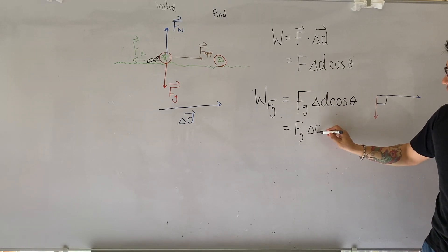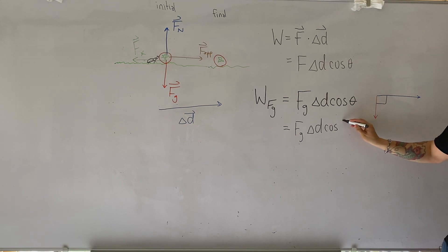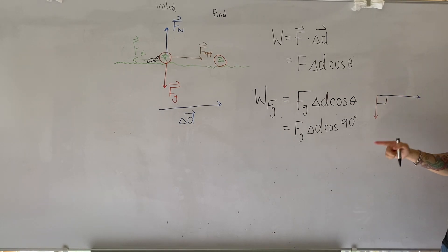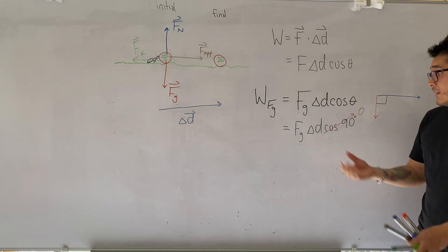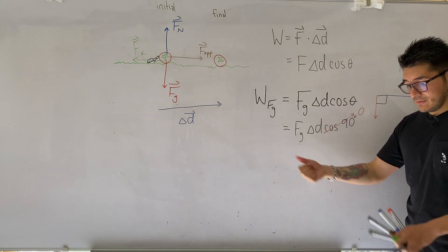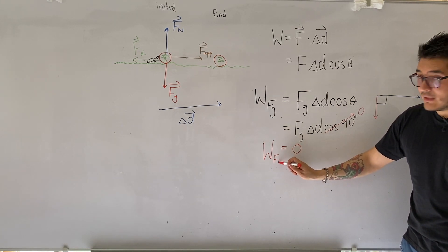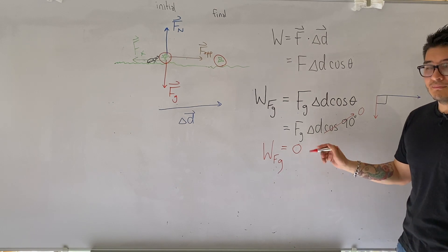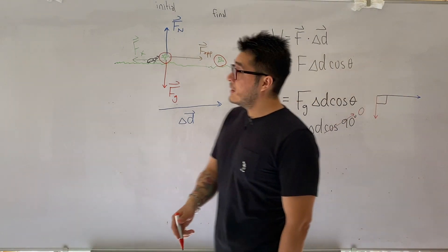The angle formed when they are joined tail to tail is 90 degrees. Applying the formula: force of gravity times displacement times cosine of 90 degrees. Cosine of 90 is equal to zero, so multiplying by zero gives us zero. The work done by the force of gravity equals zero joules. Work is the transfer of energy, so zero joules of energy is transferred by the force of gravity.